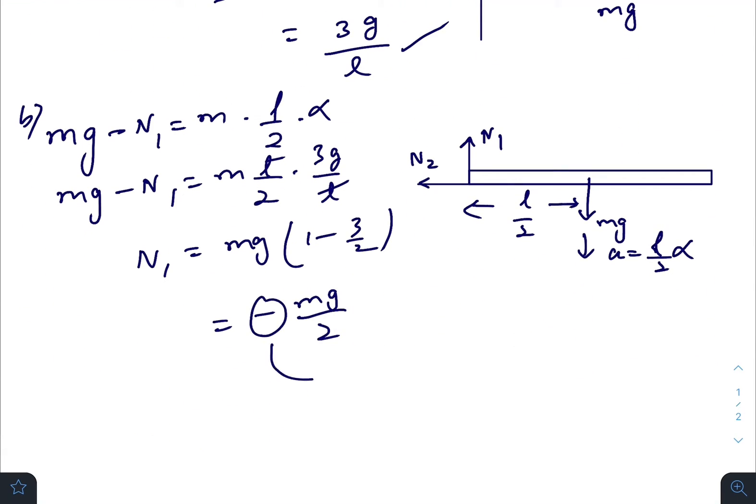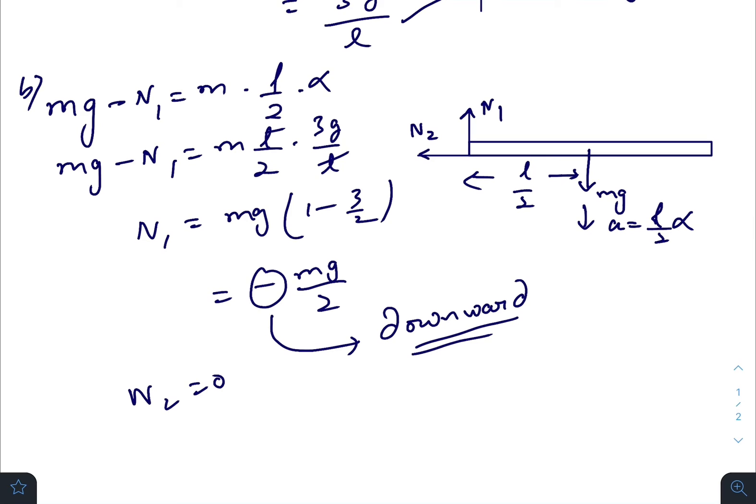The negative sign indicates that the direction of N1 that we have taken should be in the downward direction, and N2 will be 0 as there is no acceleration in the horizontal or along the x axis. So hinge force equals mg divided by 2 in the downward direction.